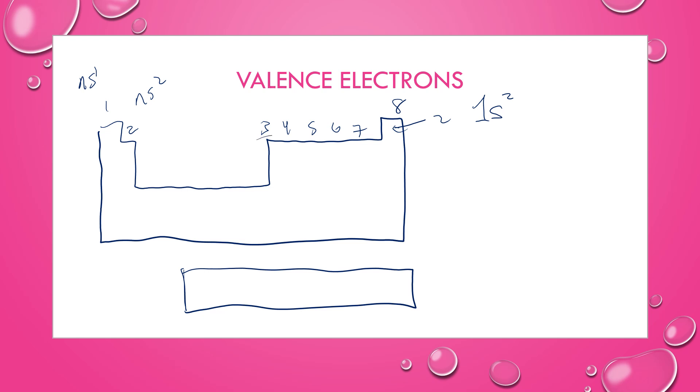Group 13, we're going to get into level 1S2. So S is full, but now we're into the P sublevel. I'm going to use N here, so NS2, NP1. That's three total valence electrons, two in the S and one in the P. 14 would be NS2, NP2. 15 would be NS2, NP3. 16 would be NS2, NP4.